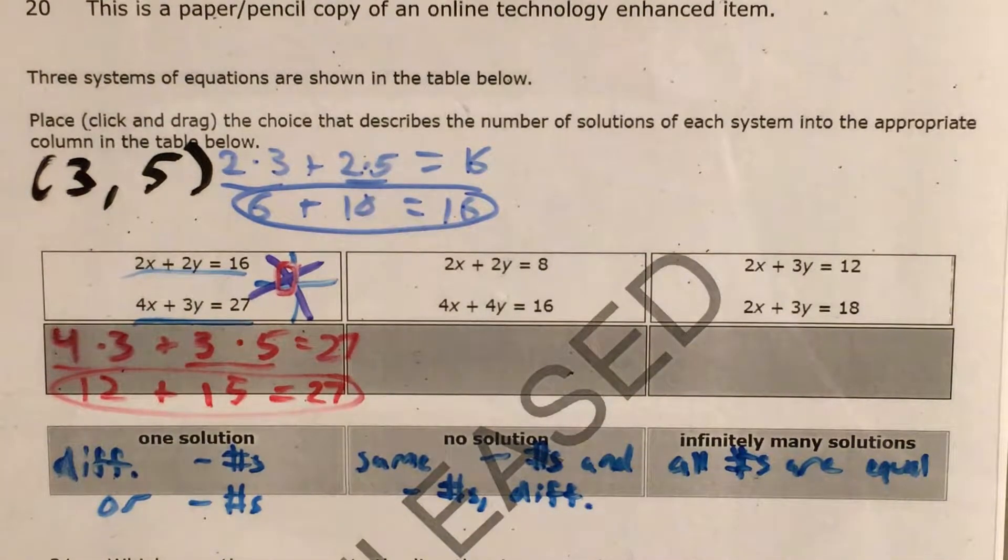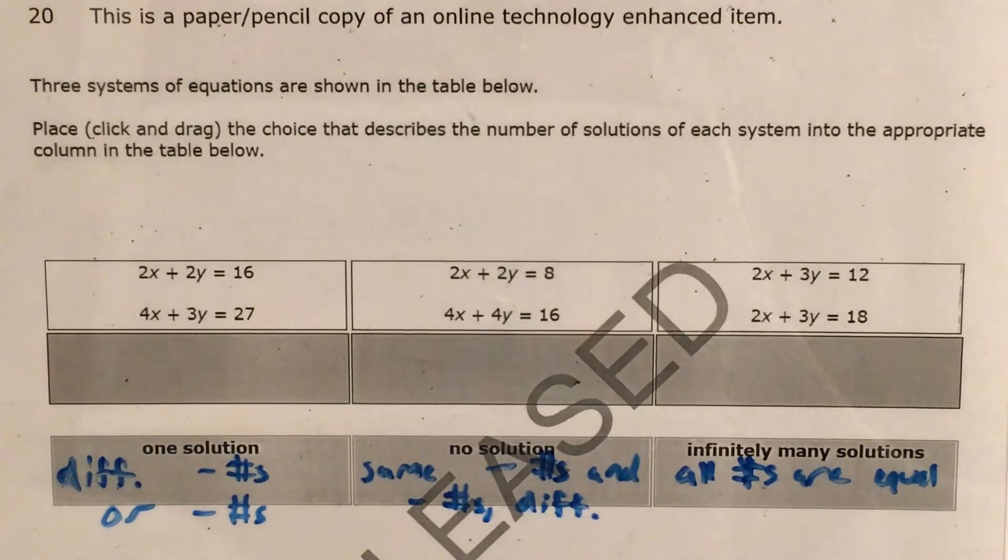Now there's going to be a magic edit while I erase all of this. And now let's actually talk about how we can tell when a system has one solution, no solution, or infinitely many solutions.